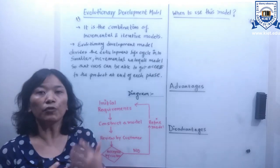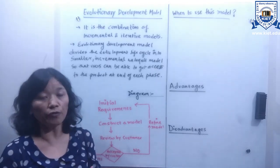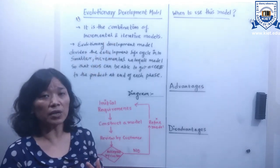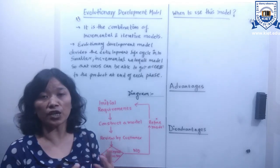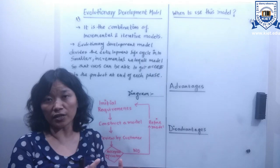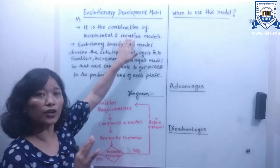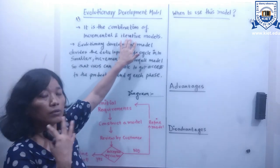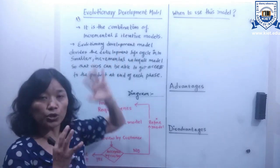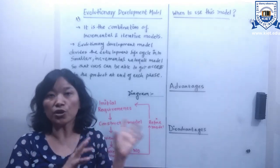The evolutionary model is basically a component of software engineering that combines incremental and iterative models. Incremental means the number of stages increases, and iterative means it involves the iteration of processes. That's why the evolutionary model is considered to be the combination of these two models.